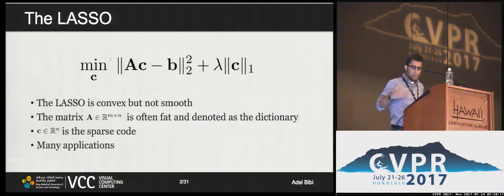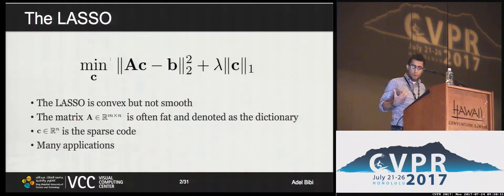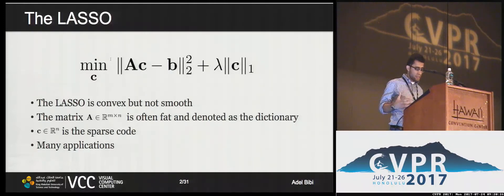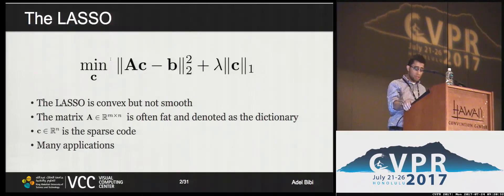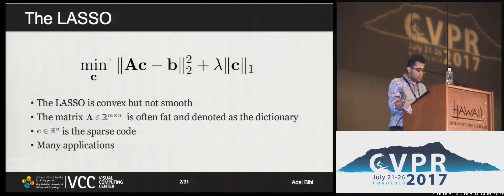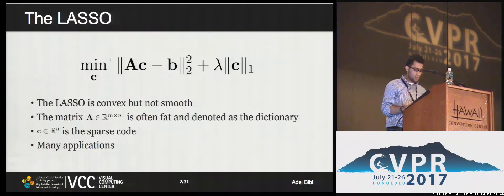This is the optimization problem that we seek to solve. Essentially, we want to find a vector C that fits the data with an L1 prior that induces sparsity. We seek to find a sparse solution that best explains the data. The problem is convex, however it's not smooth. We'll denote the matrix throughout this presentation as A, which is often fat, as a dictionary, and solution C as a sparse code.